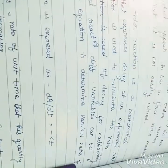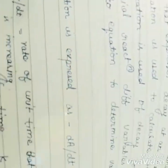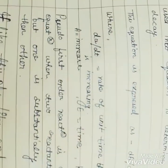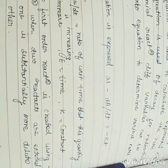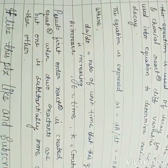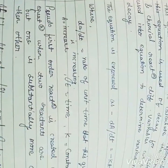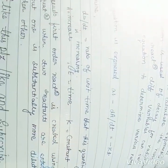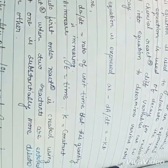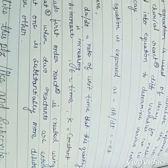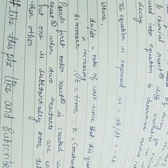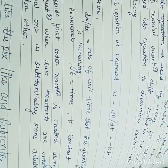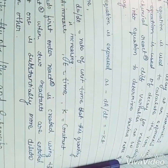In this equation: t is time, which increases; k is a constant; and dA/dt is the rate per unit time, representing how much the quantity is changing.